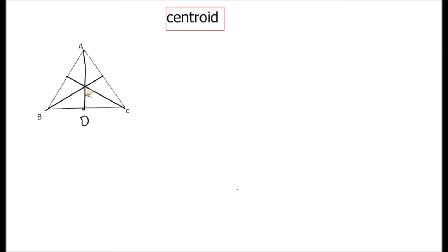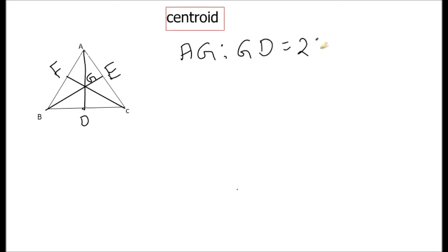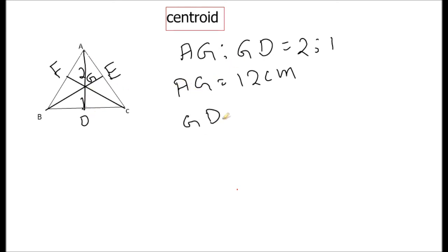All the medians intersect at a point called the centroid, denoted by G. An interesting property is that AG to GD equals 2 to 1 — the centroid divides the median in the ratio 2:1. If AG is 12 centimeters, then GD is 6 centimeters, and the full median AD is 18 centimeters.